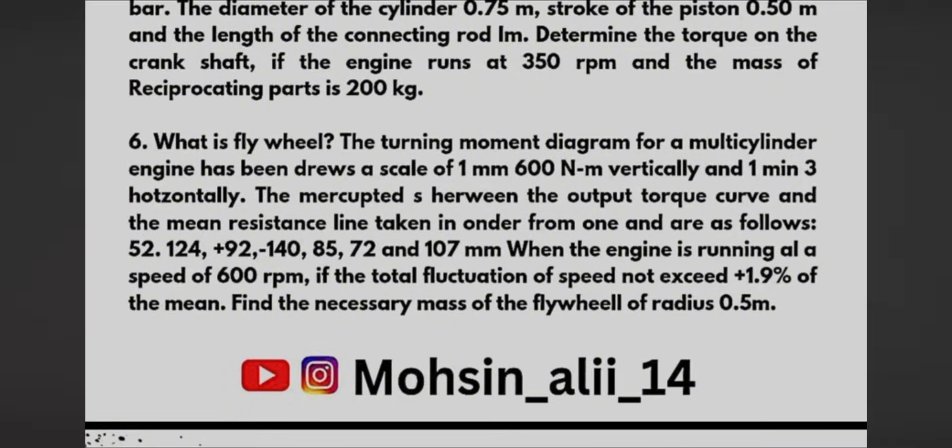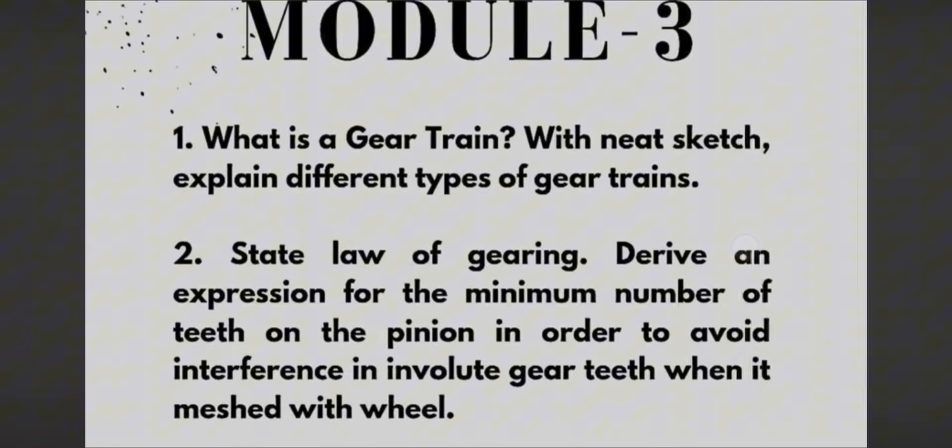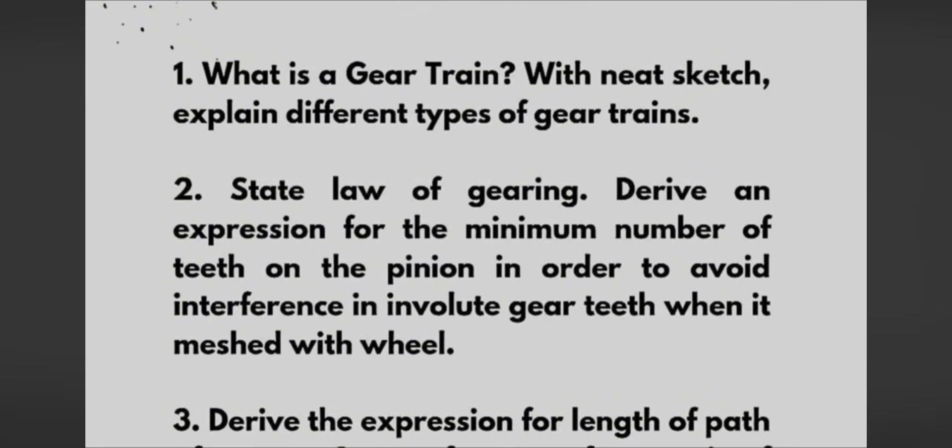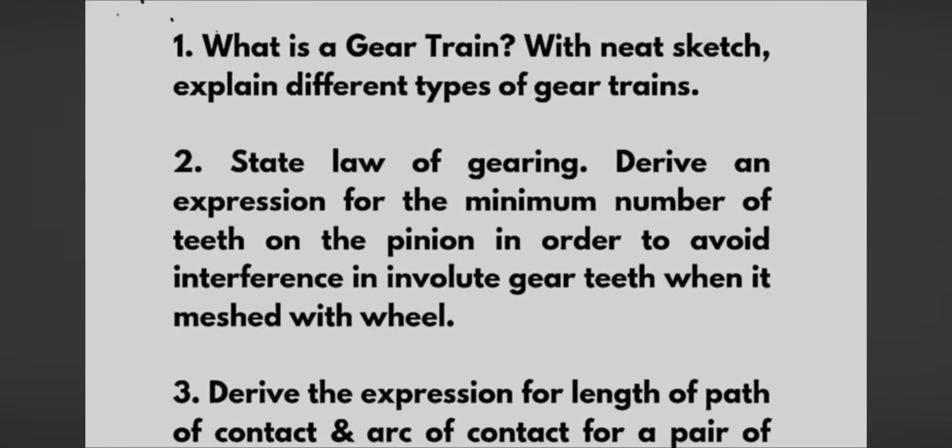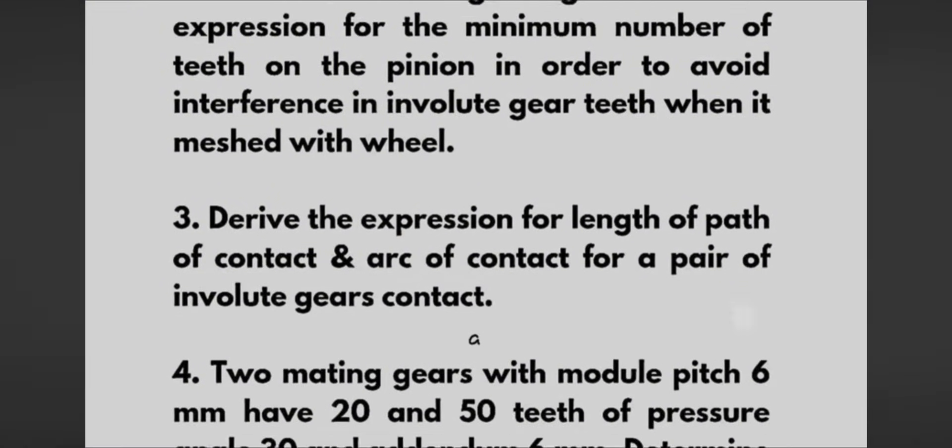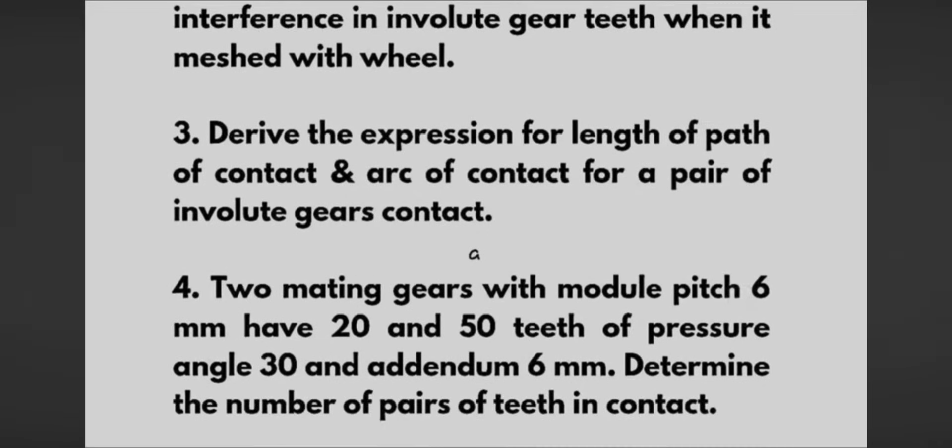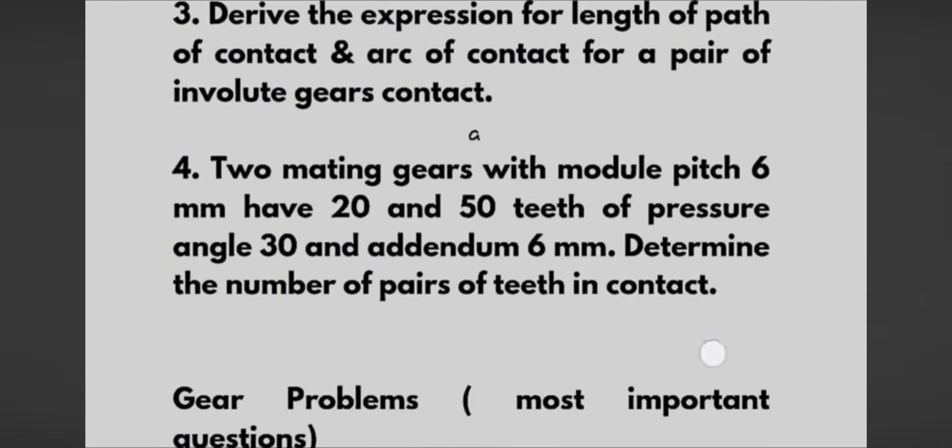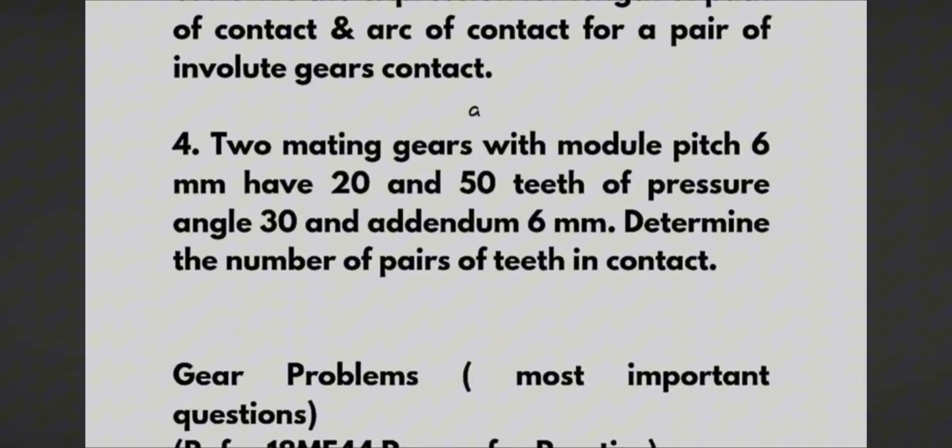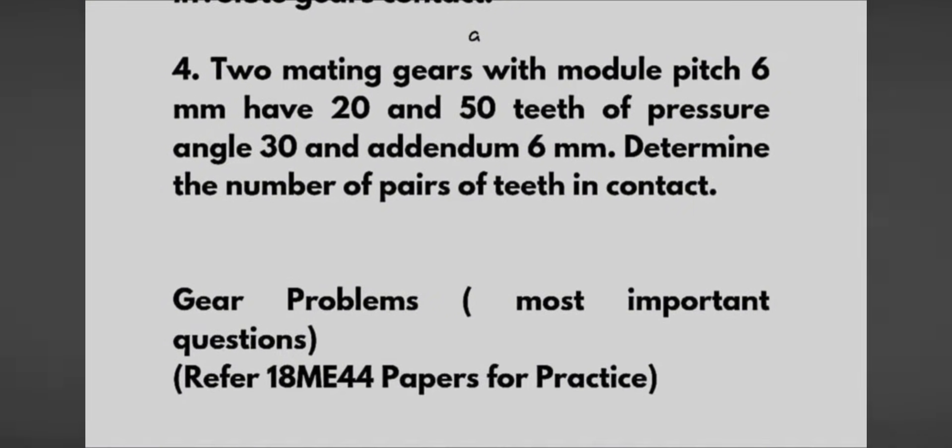Now coming to Module 3, we have what is a gear train? With neat sketch, explain different types of gear trains. State law of gearing. Derive an expression for the minimum number of teeth on the pinion in order to avoid interference in involute gear teeth when it meshes with a wheel. Derive the expression for length of path of contact and arc of contact for a pair of involute gears in contact. Here is the question: two mating gears with module pitch 6mm have 20 and 50 teeth of pressure angle 30 and addendum 6mm, determine the number of pairs of teeth in the contact.